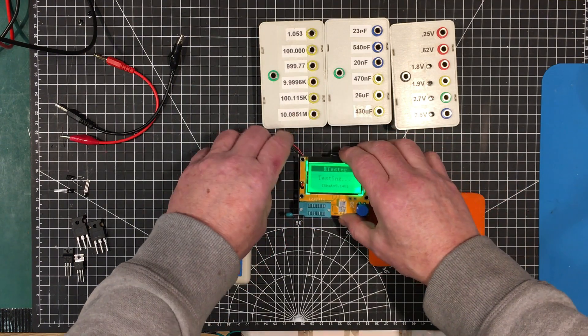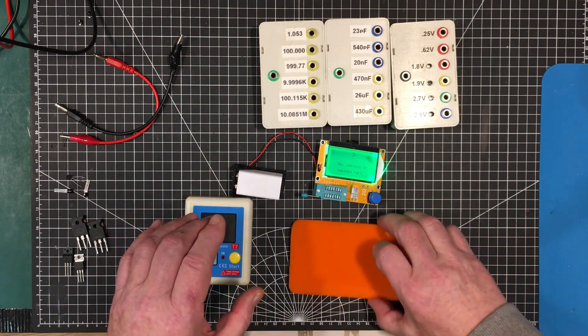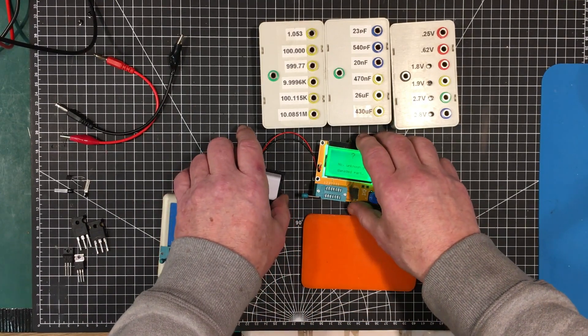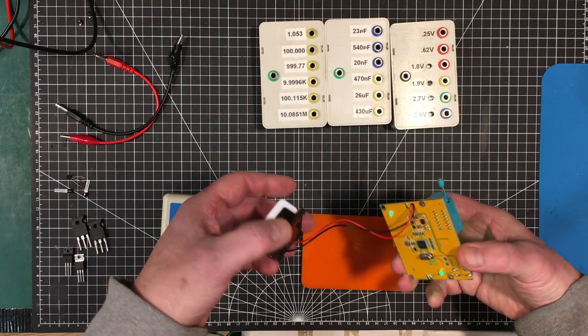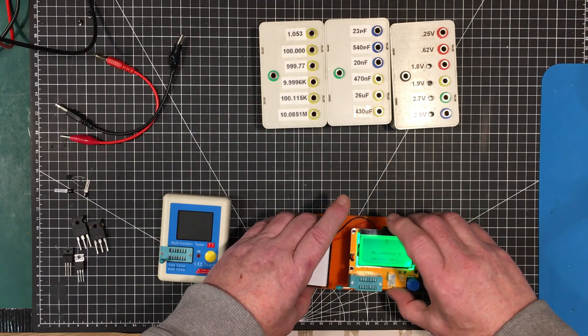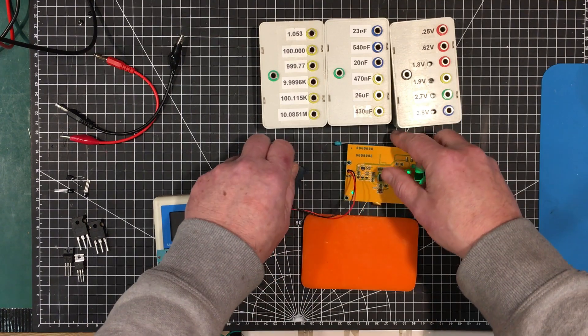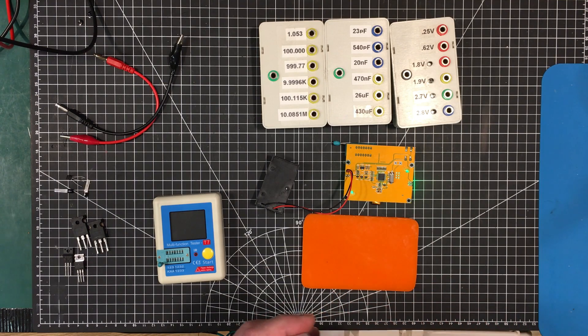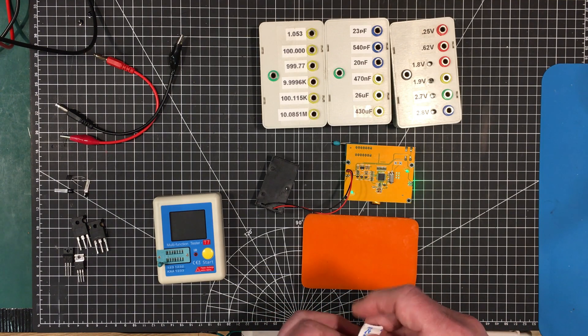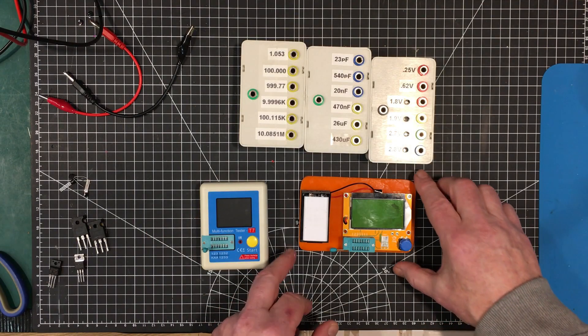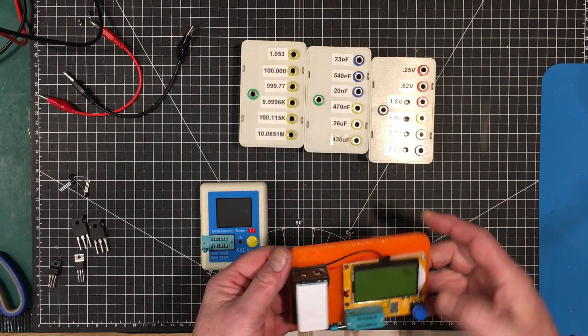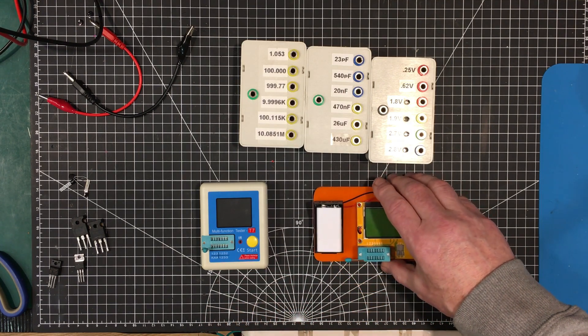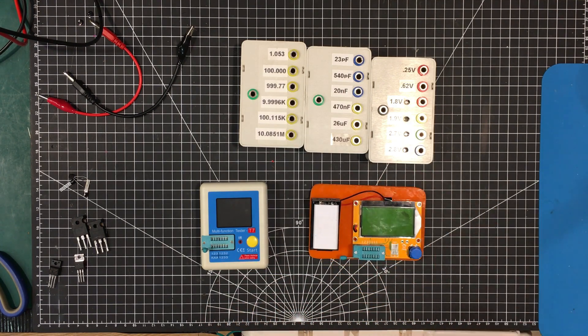Okay, so the first thing I'm going to do is mount it to this. I use this orange acrylic stuff. I've got huge sheets of it so I use it for mounting stuff onto. I'm just going to mount it on there like that using double sided sticky tape. Let me get that done and then we'll get into the testing of the testers.